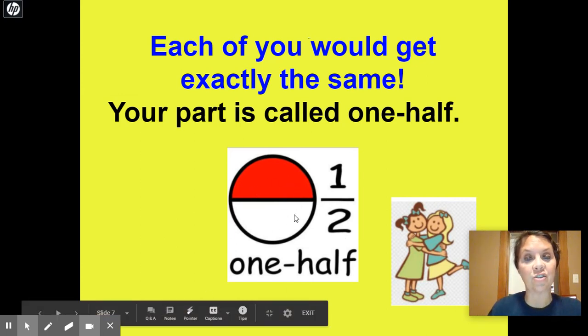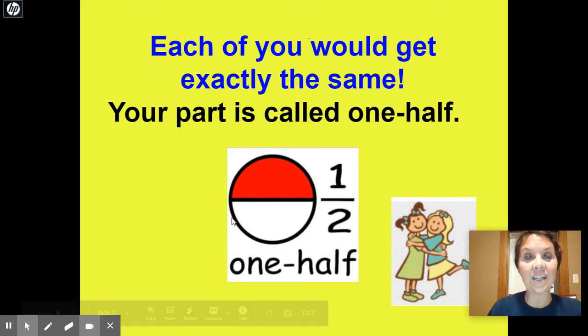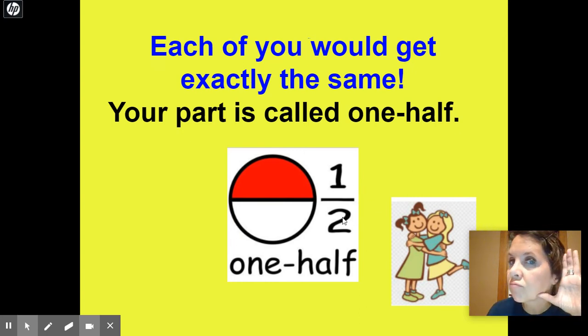So, like this circle that's divided into two equal parts, each part is called one half, or we could call it a half. When we write one half, we write a one, and then we put a line across, and then we put the two under the line. This number says one half. Can you all say one half? Yeah, I think I heard you say one half.